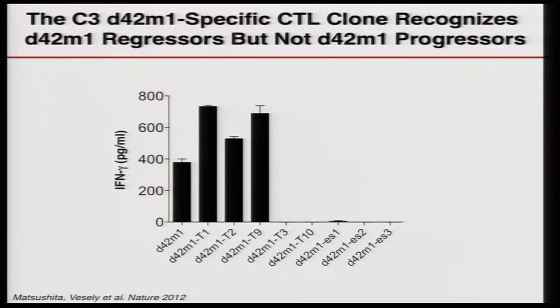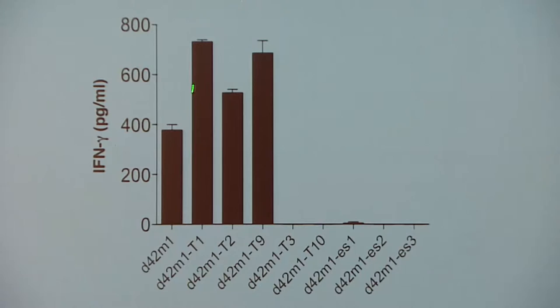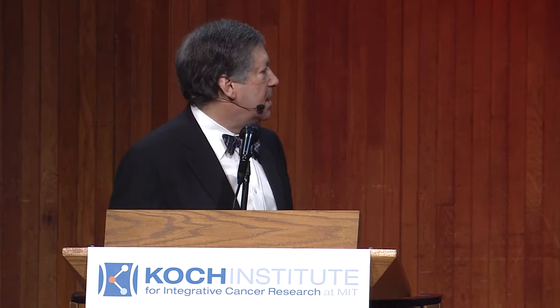This suggested that there were some shared epitopes relevant to the growth behavior of these tumors. To look at this in more detail, Kazu Matsushita took a CTL — a CD8 T-cell clone generated from a mouse that had rejected the D42M1 tumor — and incubated it in vitro with parental D42M1, the regressor-progressor clones, or the escape tumors. This T-cell clone recognized only those forms of D42M1 capable of being rejected in wild-type naive syngeneic mice, specifically the D42M1 parental cell line and the three regressor clones. So this told us there was a shared epitope between these regressors.